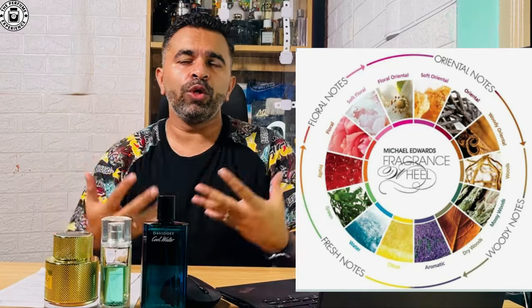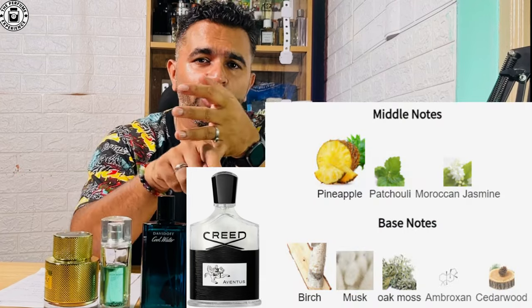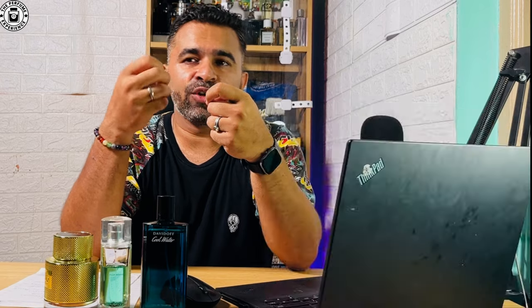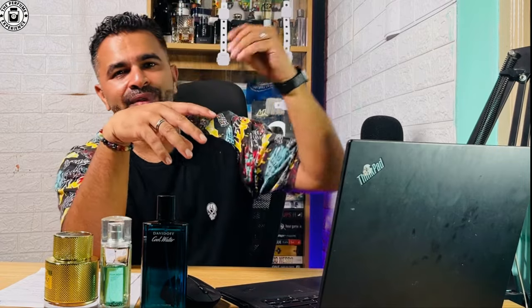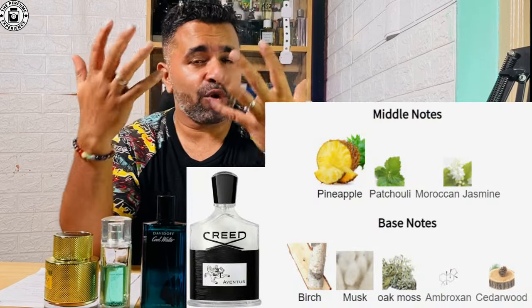Woody fragrances include sandalwood, rosewood, and cedar. Mossy woods are fragrances with oak moss or birch that give a mossy, rainy, green feeling — like vetiver gives you that mossy vibe. Creed Aventus is a good example; it has a lot of fruity tones but is also heavy on oak moss, which some people don't like.